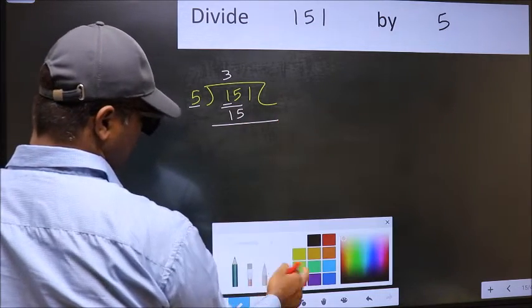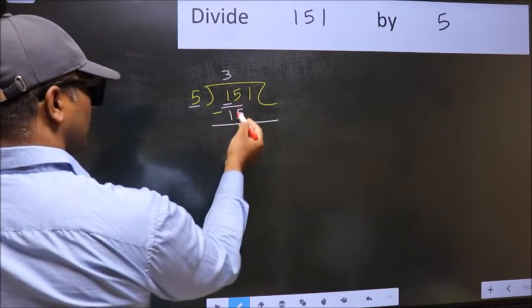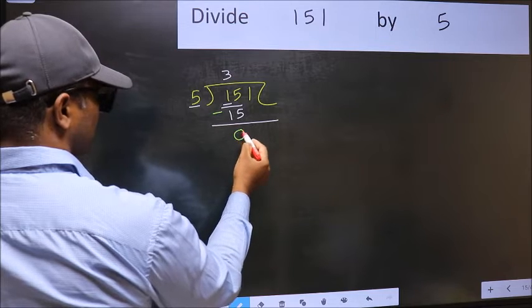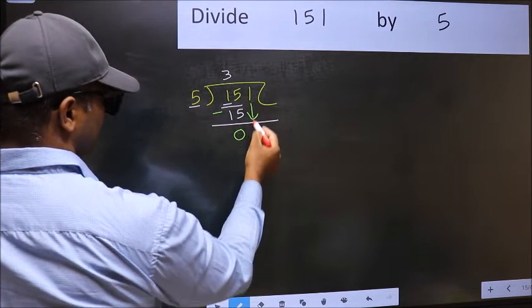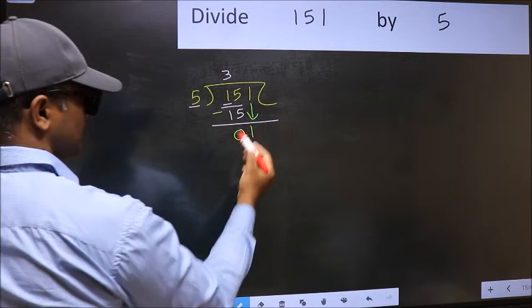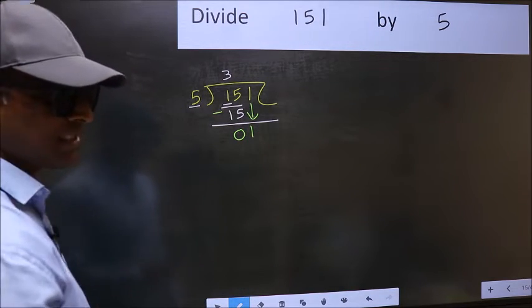Now you should subtract. 15 minus 15 is 0. After this, bring down the beside number. So 1 down. After this step, the mistake happens.